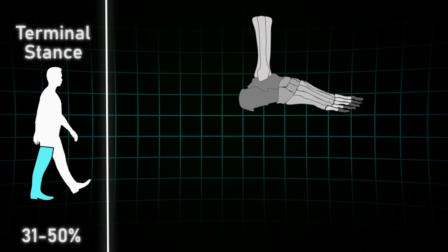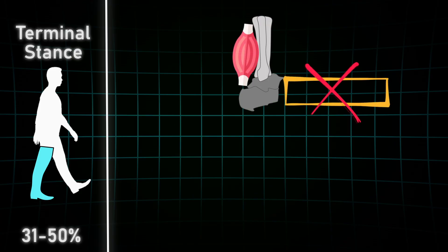Patients with calf weaknesses most often will avoid putting pressure on the forefoot because otherwise they would just fall. The same is true for partial foot amputations. Even though the calf is mostly strong enough, the forefoot lever is just missing.